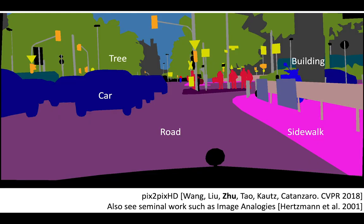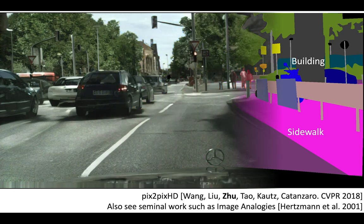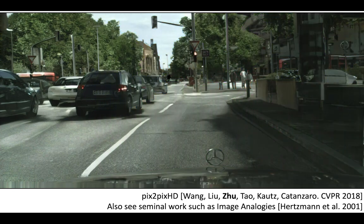We can apply the same idea to other types of user inputs. Here a user draws colors representing different object classes, just like a painting-by-numbers game — sky pixels, tree pixels, road pixels. Recently, my colleagues at NVIDIA and I presented a high-resolution version called Pix2PixHD. Given the user input, it can produce a nearly photorealistic image at 2000 by 1000 resolution in real time.